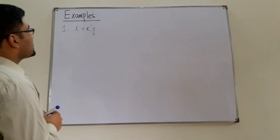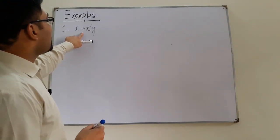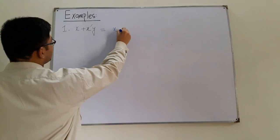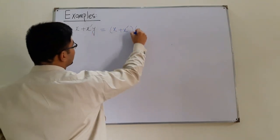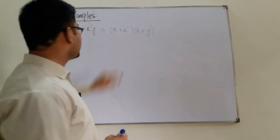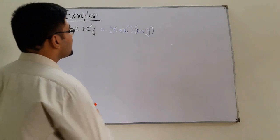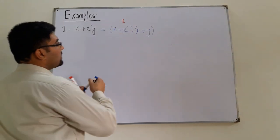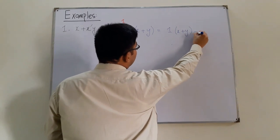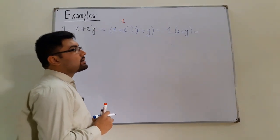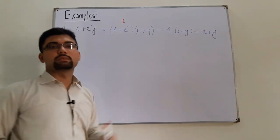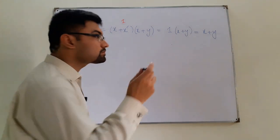x plus x complement y. Now this is the distributive law of the OR operation over the AND operation. I can write it as (x plus x complement) into (x plus y). Now x plus x complement — we've said that anything x plus x complement is equal to 1. So I can write this as 1 times (x plus y). And we've also proved that anything ANDed with 1 is the same thing, so x plus y times 1 is again x plus y. That is the simplified version.